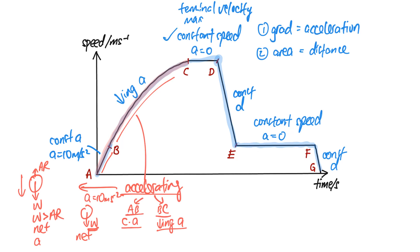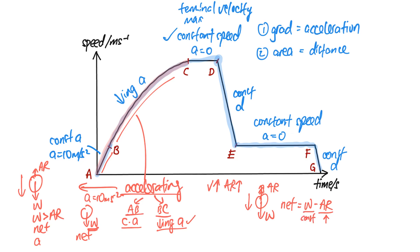For B to C, to explain why the acceleration is decreasing in terms of forces: as the speed of the skydiver increases, air resistance increases. The net force equals weight minus air resistance. As the skydiver goes faster, air resistance increases while weight remains constant, so the net force gets smaller and smaller. By F = ma, if the net force is decreasing and mass is constant, the acceleration will decrease.